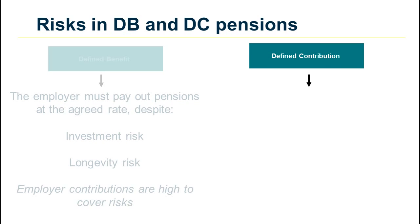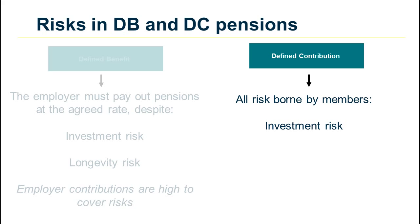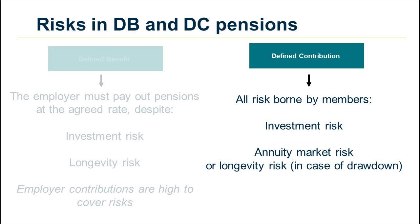In defined contribution pensions, the members bear all the investment risk, and may be seriously affected by, for example, a stock market crash. Members also face the risk of annuity rates being low at the time they wish to buy an annuity, or, if they opt for income drawdown instead of an annuity, the risk of living longer than expected and finding that their funds run out.